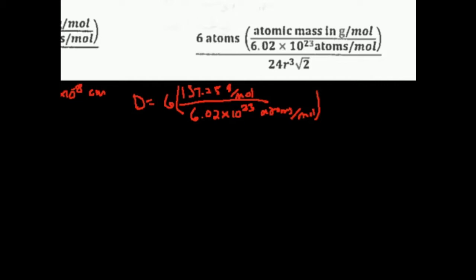The 6 has units of atoms. We're going to divide by 24 square root of 2 times the radius cubed, and our radius is 1.80 times 10 to the minus 8 centimeters, quantity cubed.